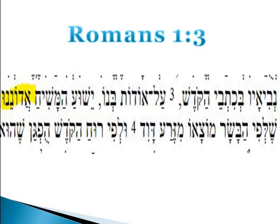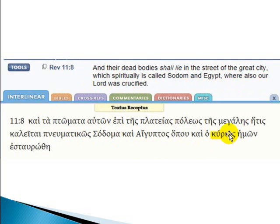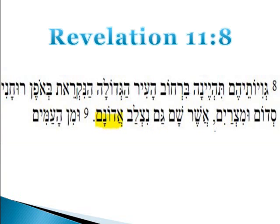This is Revelation 11:8: 'And their dead bodies shall lie in the street of the great city, which spiritually is called Sodom and Egypt, where also our Lord was crucified.' Our Lord is Yahashiah. When you read through the Greek, once again it's Kurios, which is Lord. Then when you go into the Hebrew of Revelation 11:8, at the end you have Adawanmah, which is Lord.